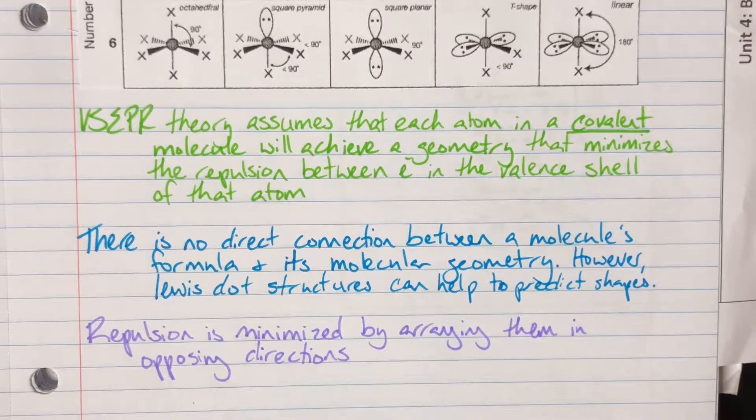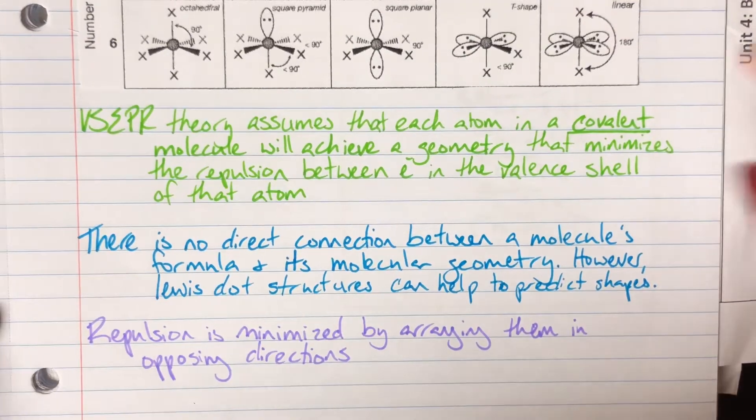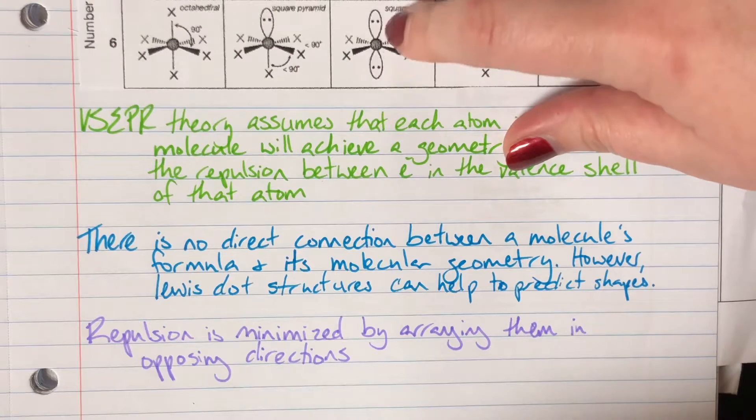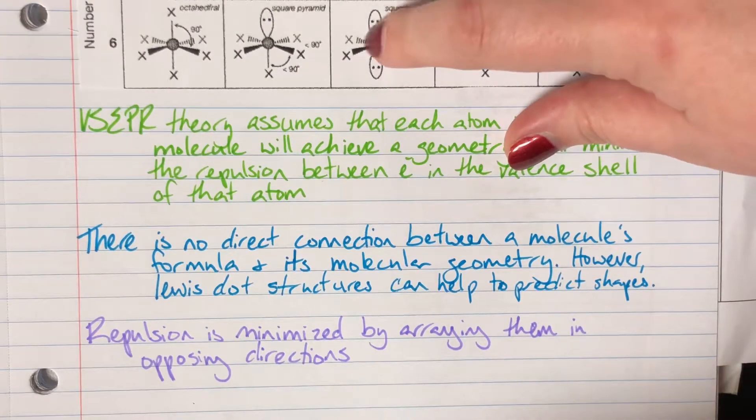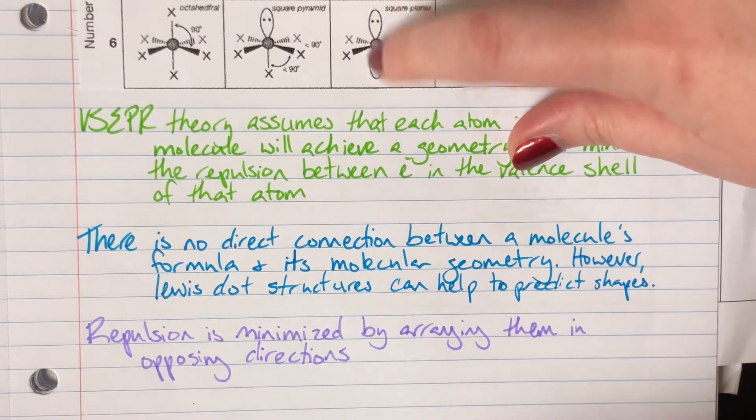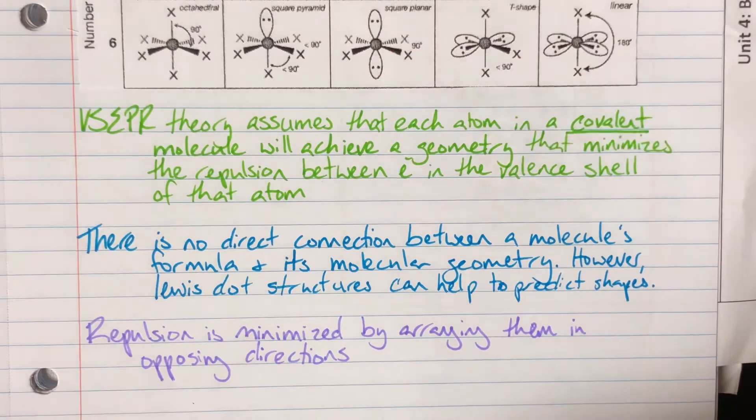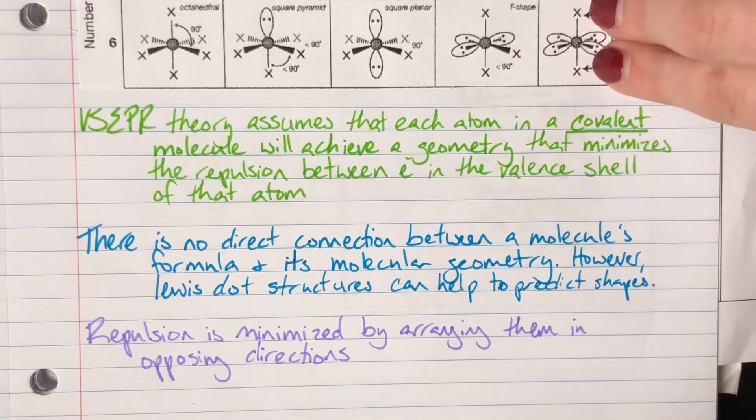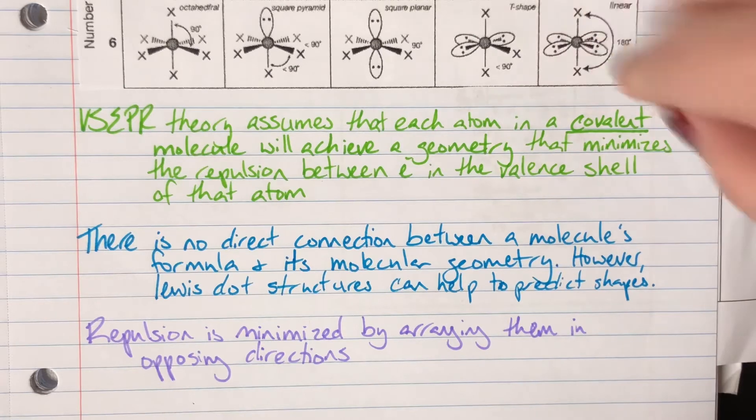Lastly, my repulsion is going to be minimized by arranging electrons in opposite directions. So you can see here my repulsion between my valence electrons here that are going to be the lone pair shapes. I have placed them on opposite sides. This is going to minimize the repulsion as they are not very close to each other. And here we have the actual atoms being as far away from each other to minimize that repulsion as well.